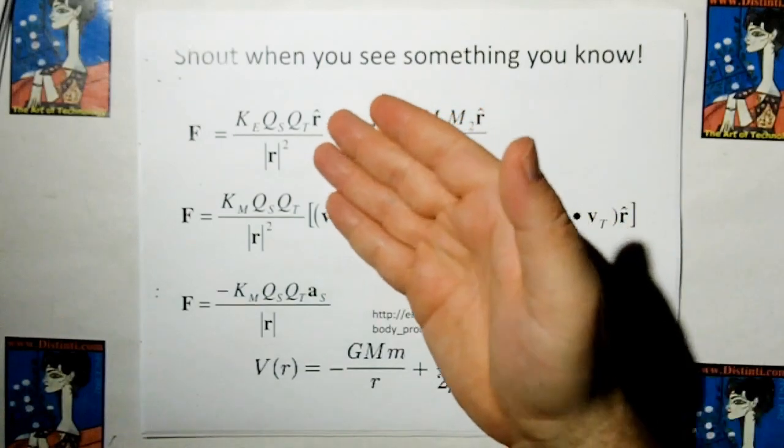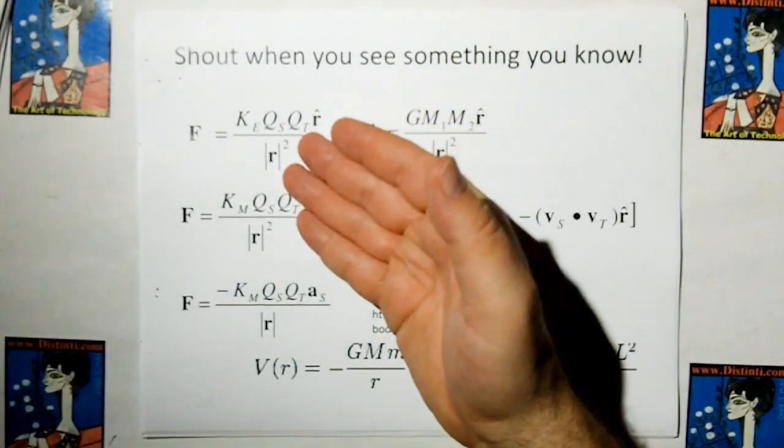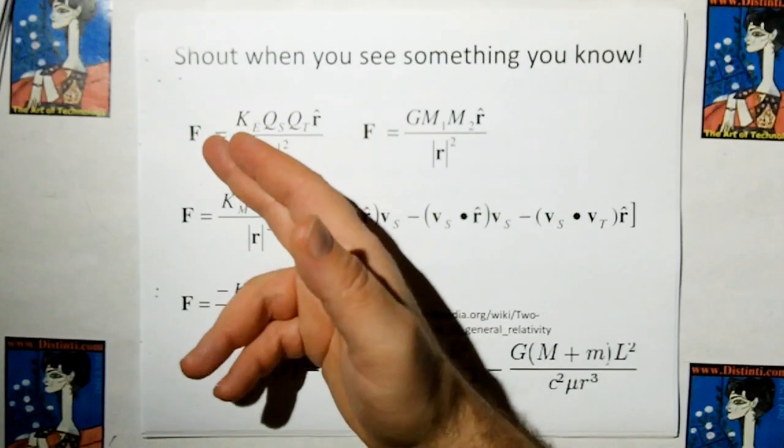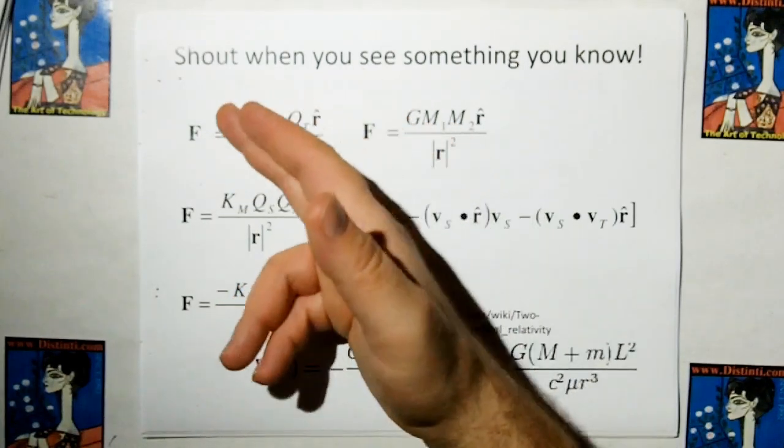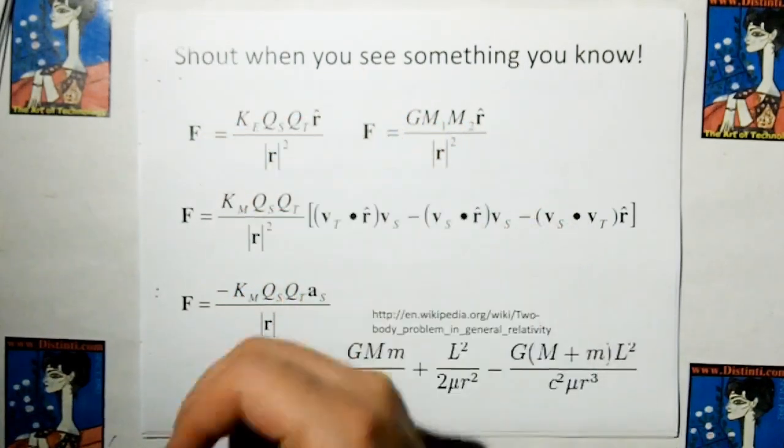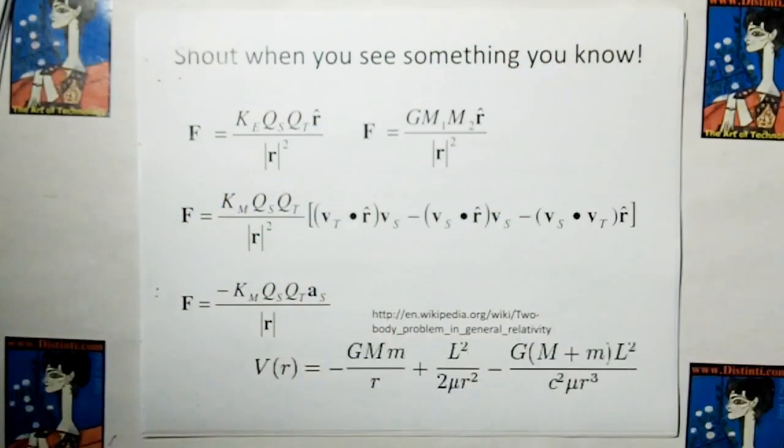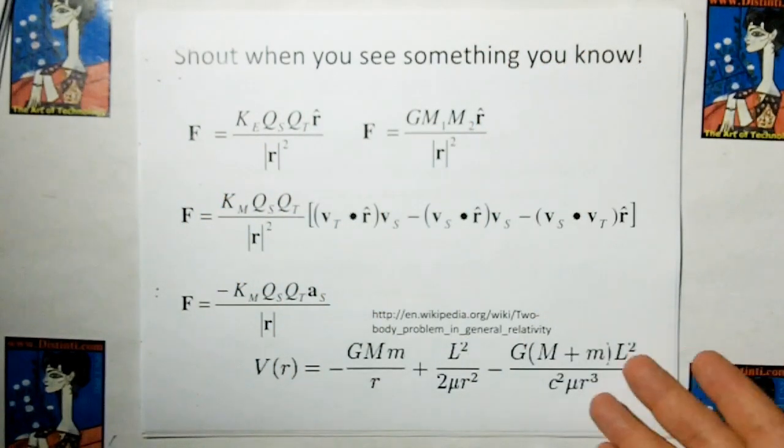As what did we do for Coulomb's Law? Well, we measured two charges at a distance and measured the force. And then we found a mathematical expression which curve fit the data. That's all they are, is empirical models. Every single one of these are empirical models, including relativity.